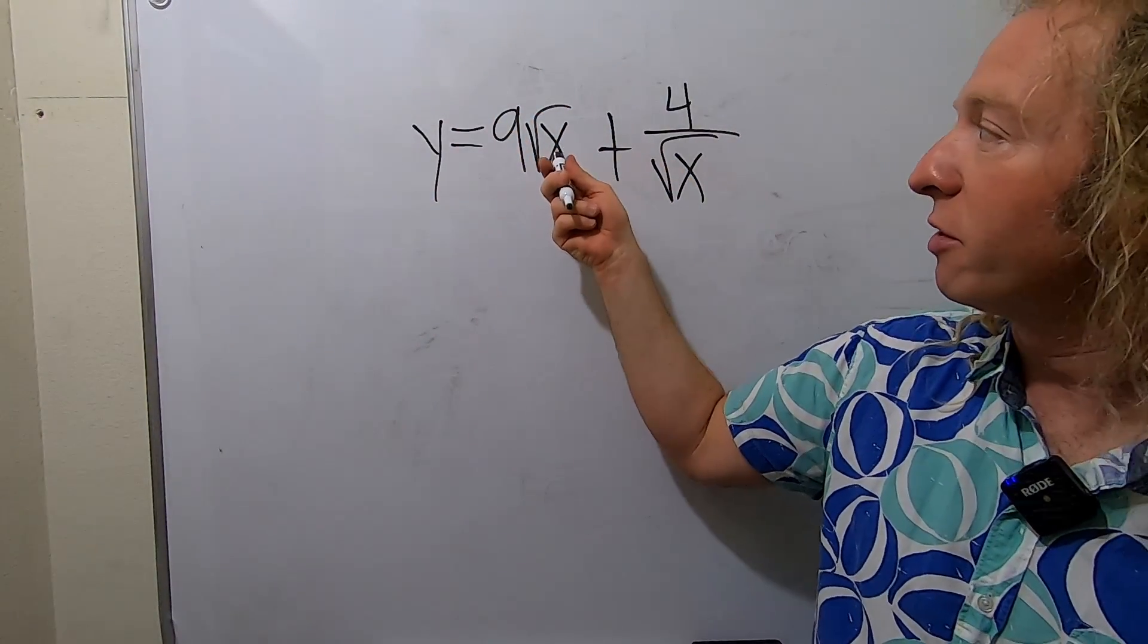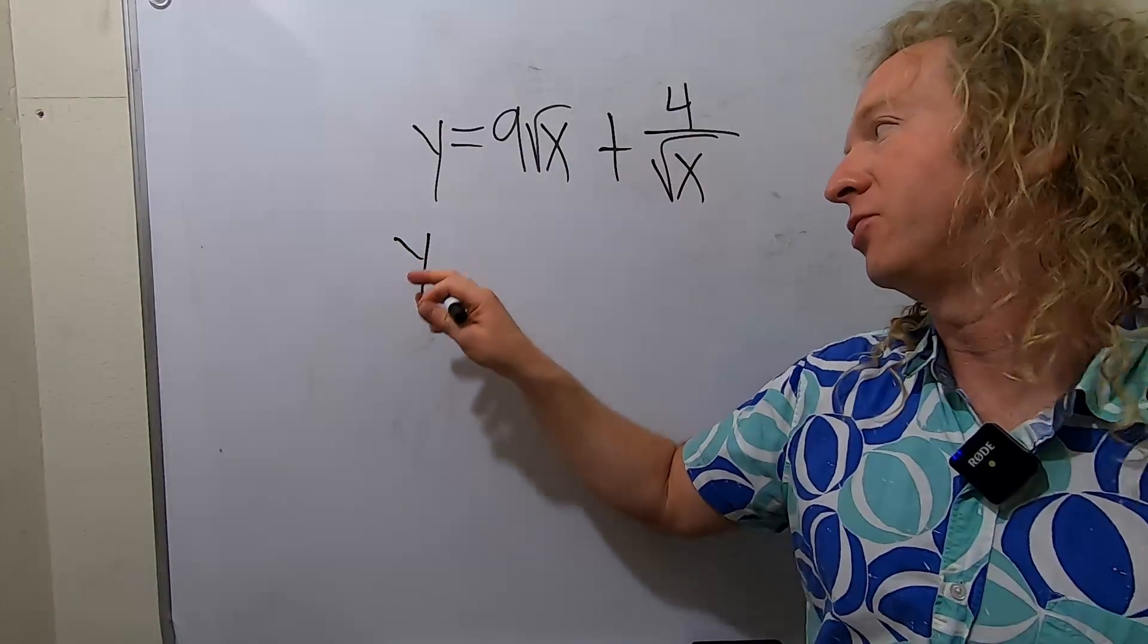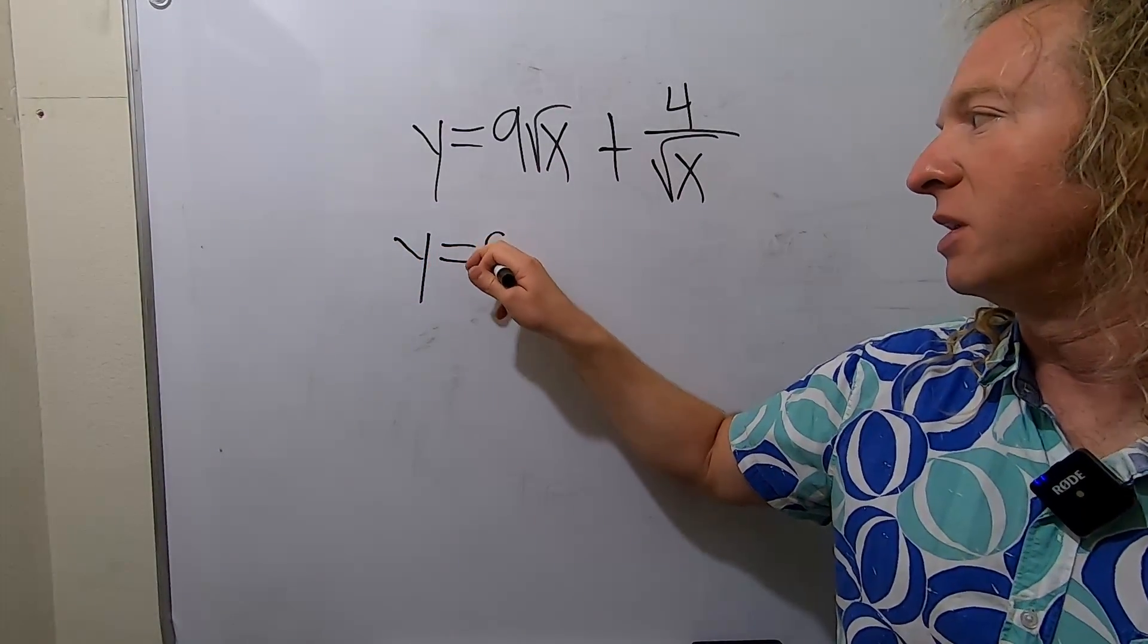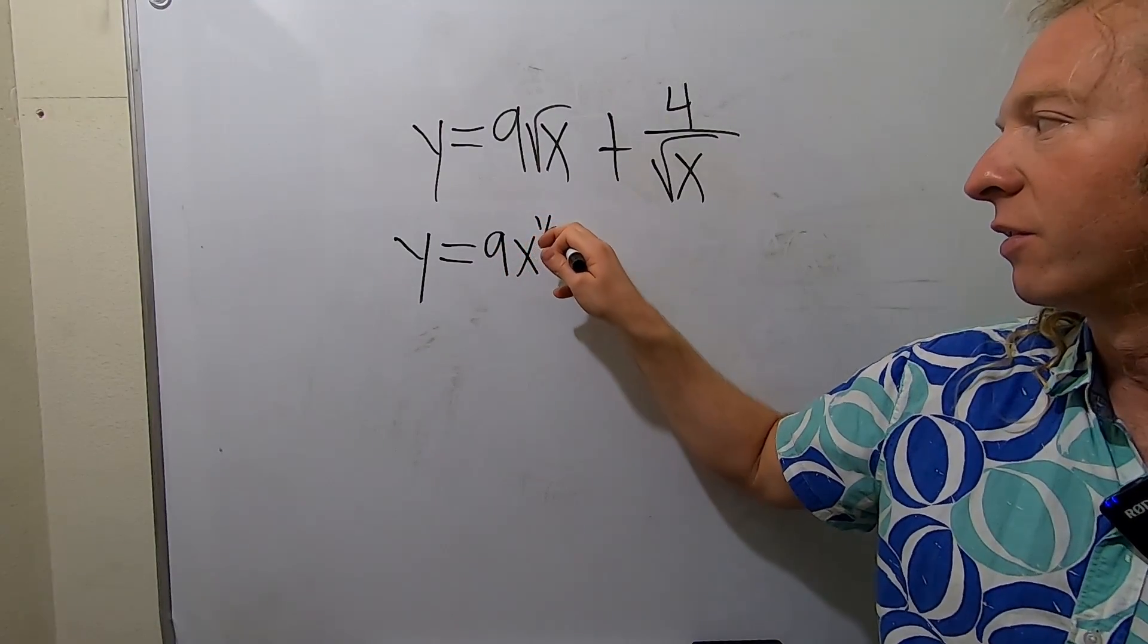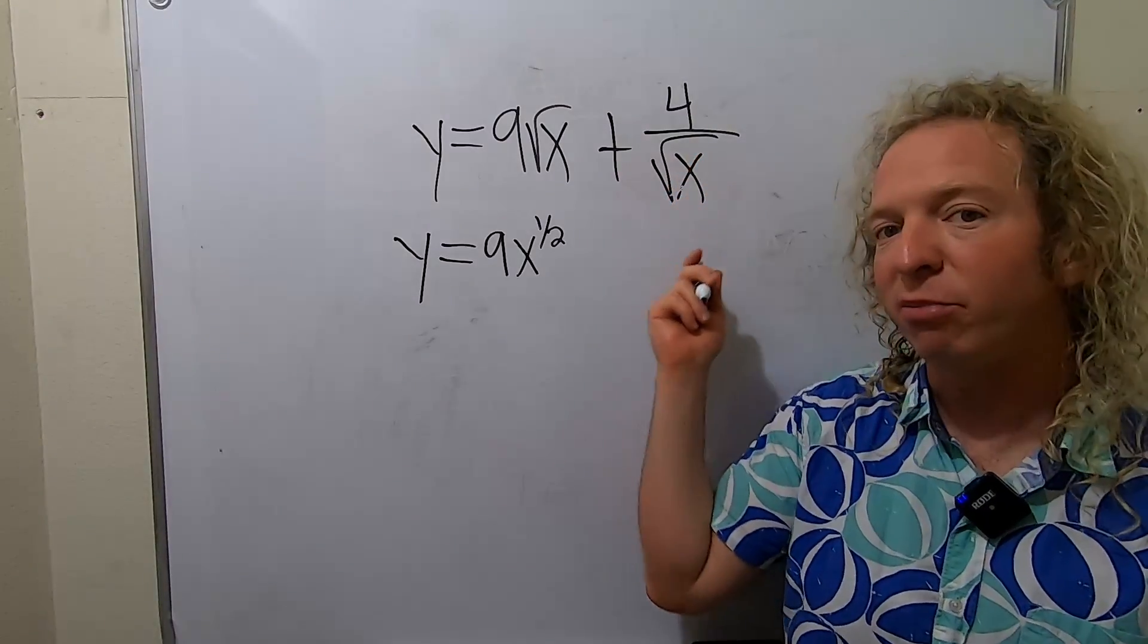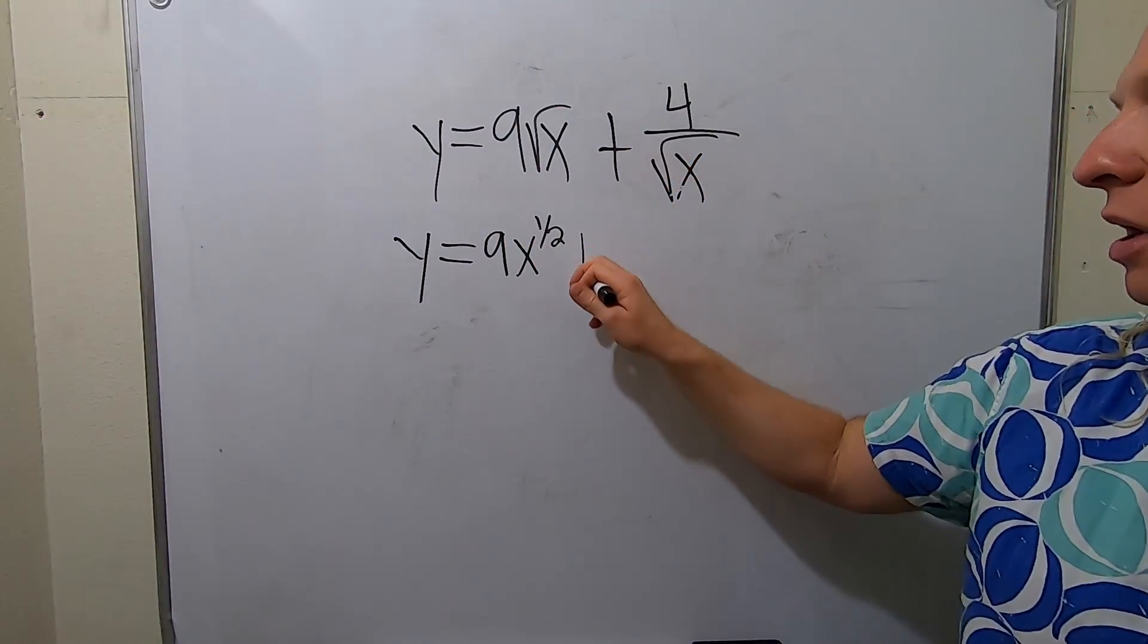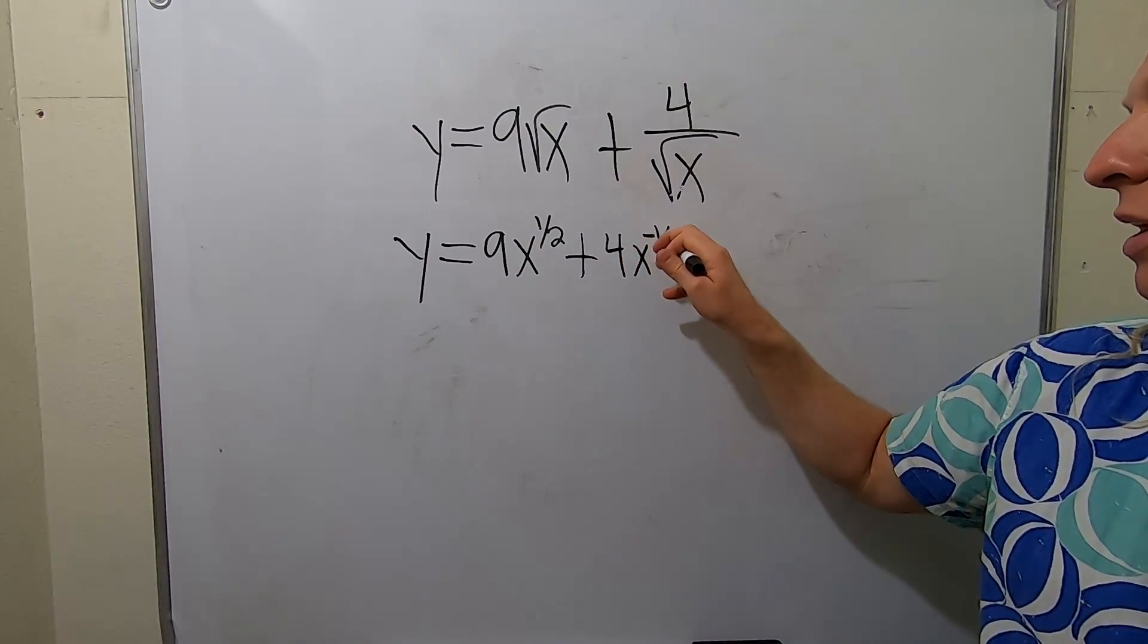Recall that you can write the square root of x as x to the 1 half. So maybe a good first step is to rewrite everything. So this will be 9x to the 1 half. And then this x to the 1 half, it's on the bottom, so you can bring it up, and it becomes negative. So this is plus 4x to the negative 1 half.